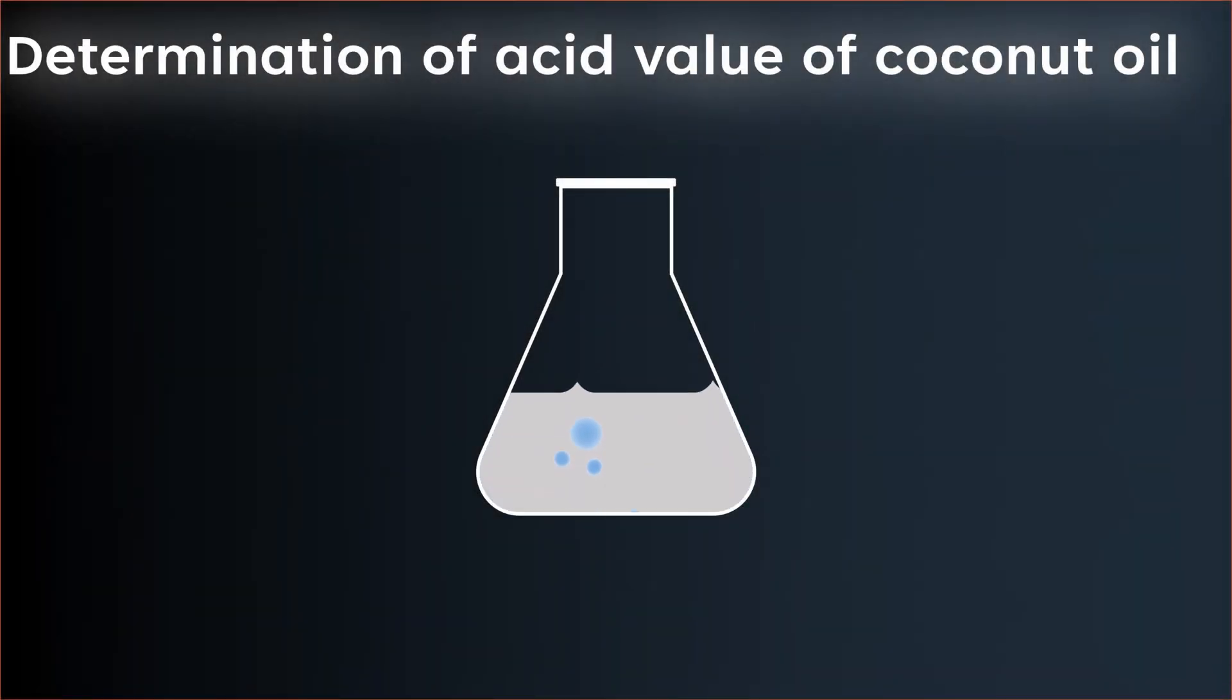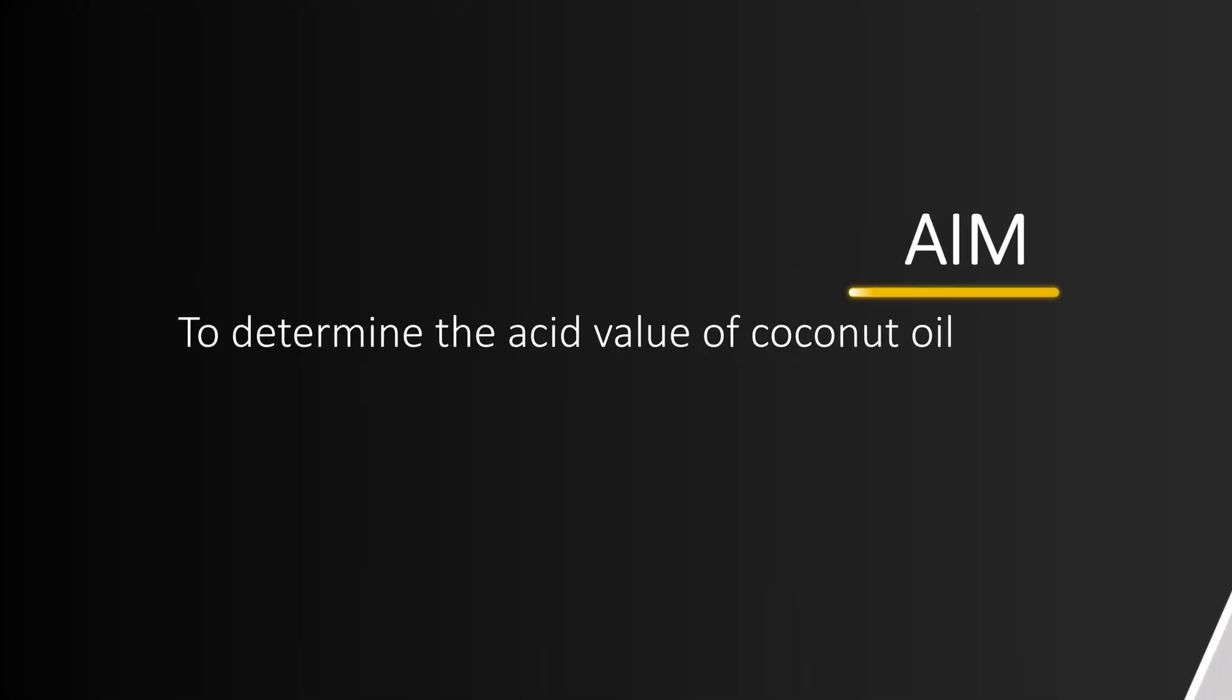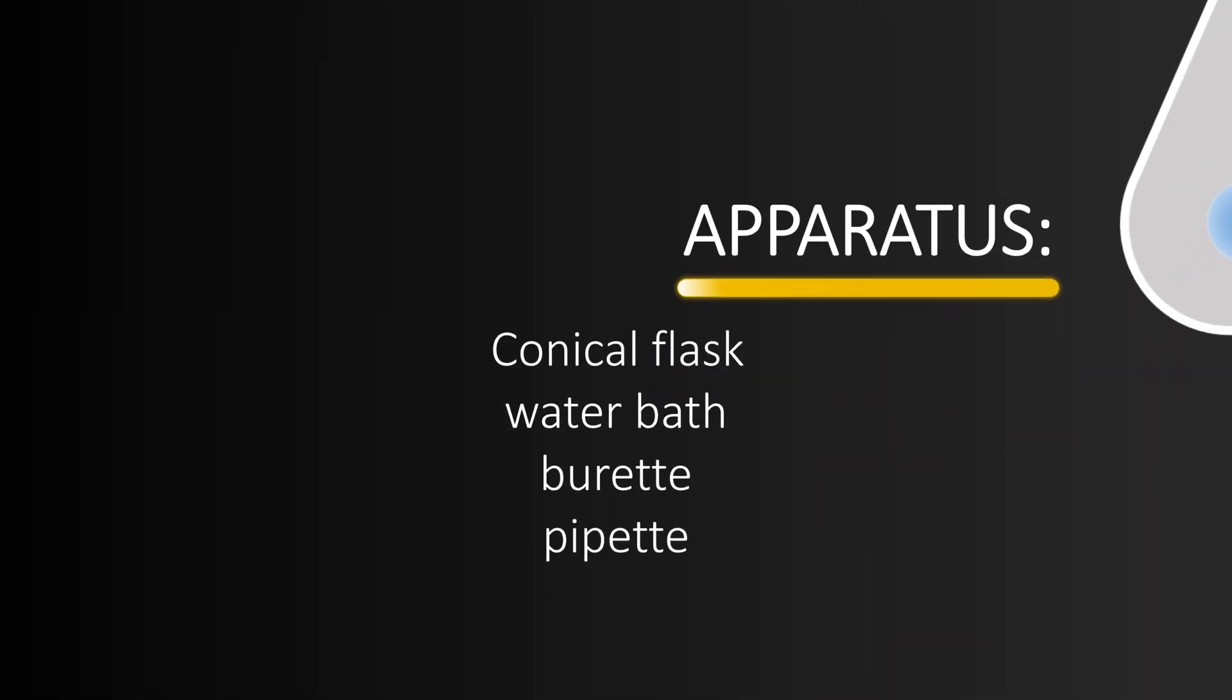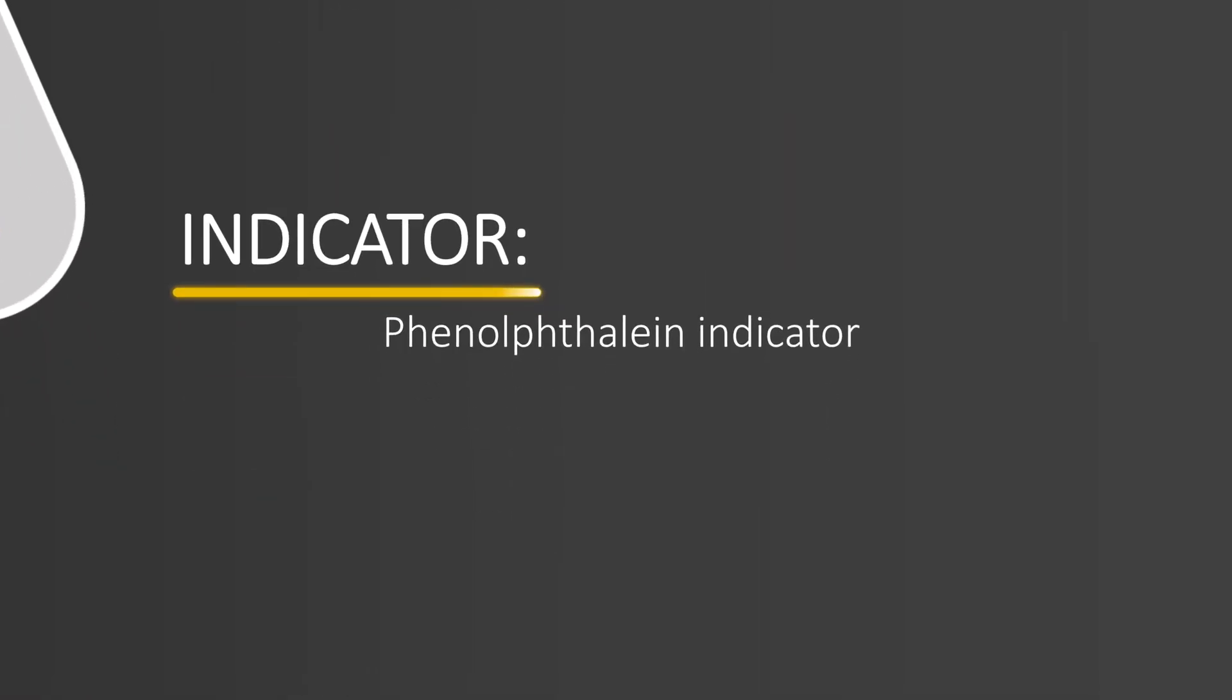Determination of acid value of coconut oil. Aim: to determine the acid value of coconut oil. Apparatus: conical flask, water bath, burette, pipette. Chemicals required: unburdened KOH, neutral ethyl alcohol, coconut oil, and phenophthalein indicator.